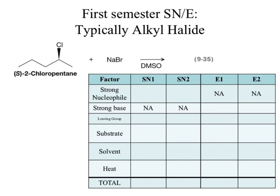In first semester, we typically talk about alkyl halides. Why would I pick an alkyl halide to introduce substitution or elimination reactions? It's a good leaving group. What else can the halide do? It can be substituted — it acts as a good leaving group, and once it's left, it could be a nucleophile.